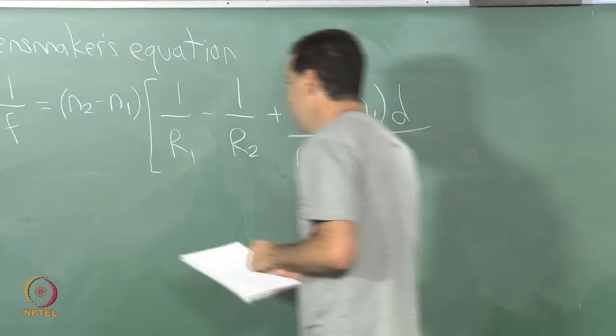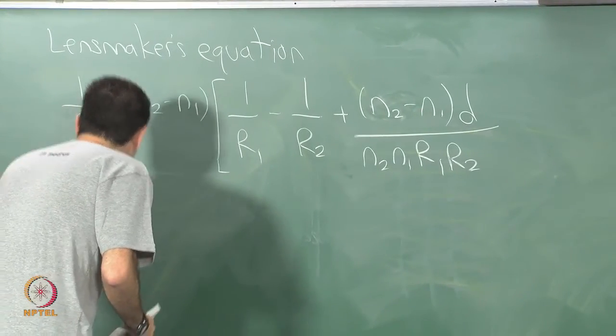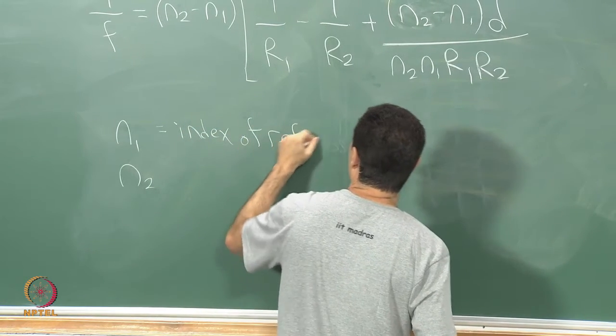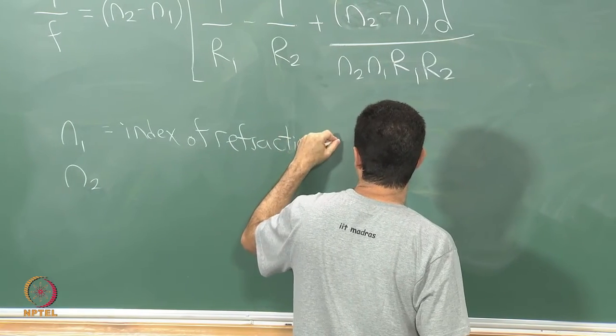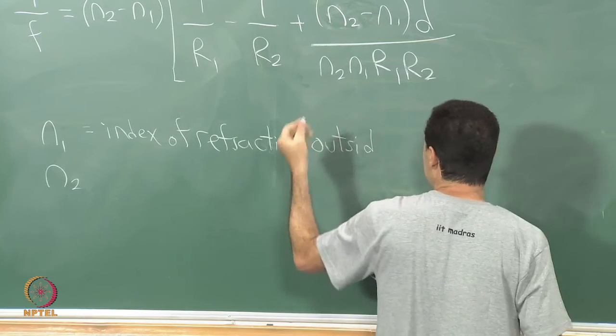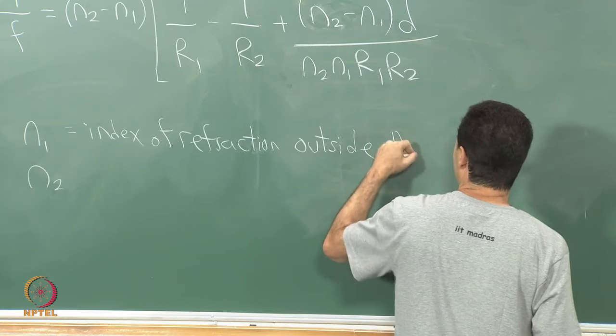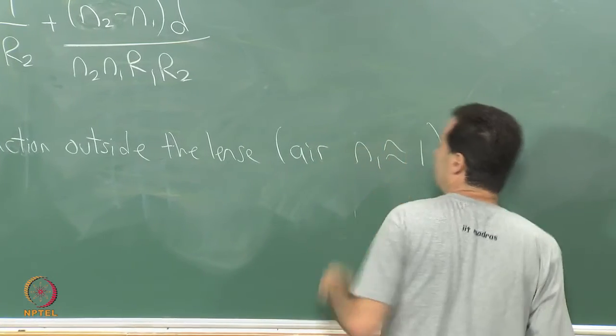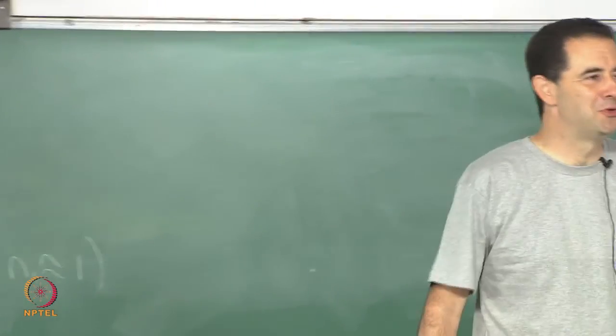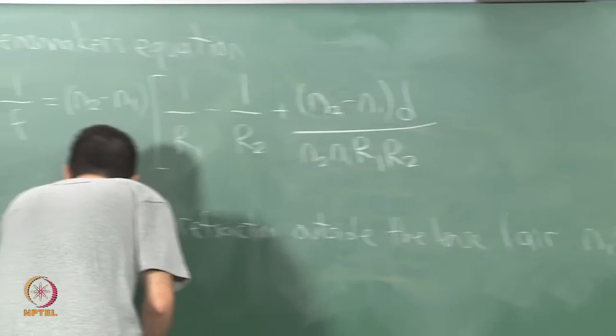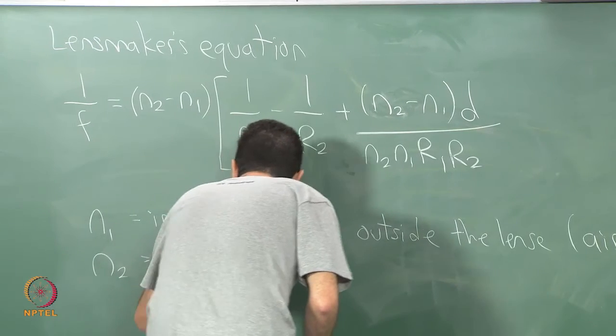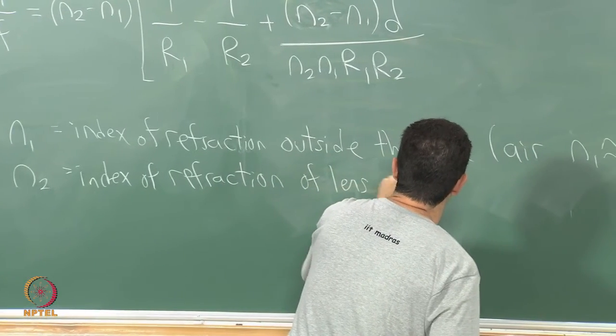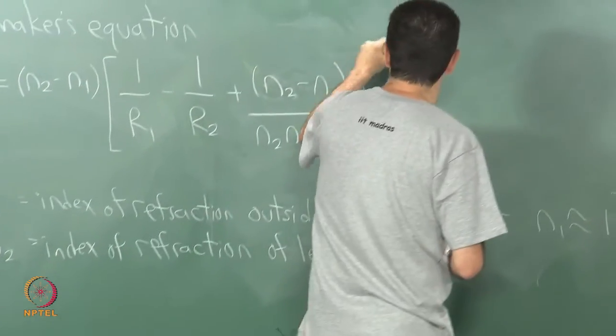n1 is the index of refraction outside of the lens, the air outside of the lens. Usually we mean air, and usually n1 is approximately equal to 1. But you can put your lenses under water and it will do something different, will behave in a different way. n2 is the index of refraction for the lens material.